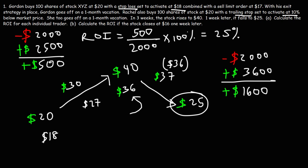And as you can see, her gain is significantly higher than Gordon's gain. Her ROI is going to be $1,600 divided by $2,000 times 100%, and so she's looking at an 80% gain.